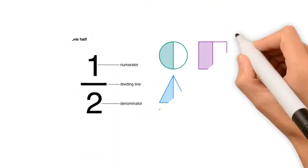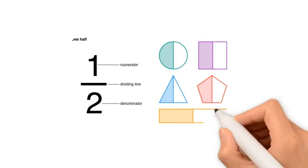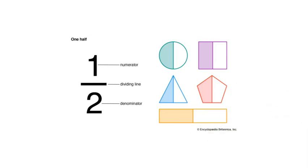Let us take another example: 1 upon 2. In all the shapes shown, each shape is divided into 2 parts and 1 part is shaded. So 1 is the numerator and 2 is the denominator. The denominator shows the total number of parts and the numerator shows how many parts we have.